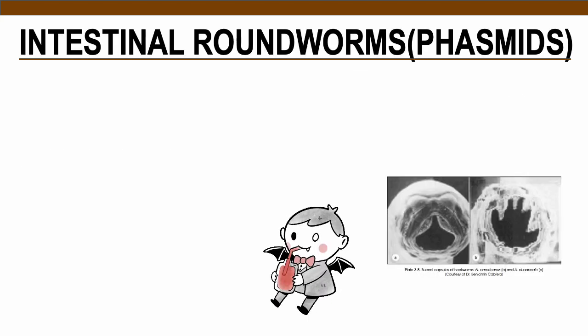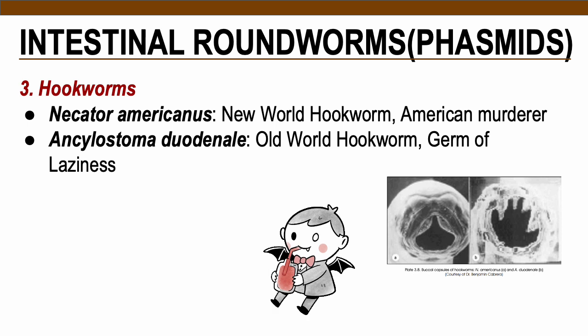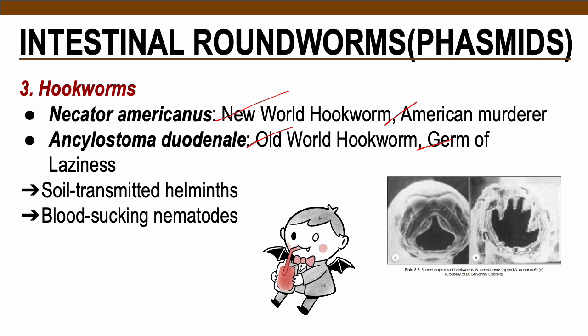The next intestinal roundworms are hookworms. Hookworms infecting humans include Necator americanus — also known as the new world hookworm or American murderer, prevalent in tropical Africa and the Americas — and Ancylostoma duodenale — the old world hookworm or germ of laziness, prevalent in Europe and southwestern Asia. Both are soil-transmitted helminths together with Ascaris and Strongyloides, also known as blood-sucking nematodes, giving patients at chronic stages iron deficiency anemia.